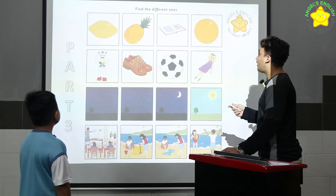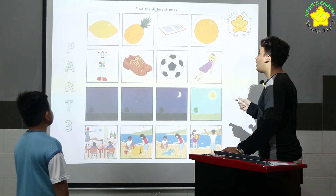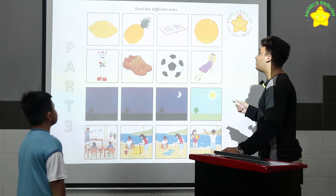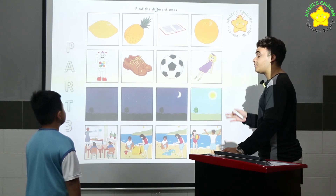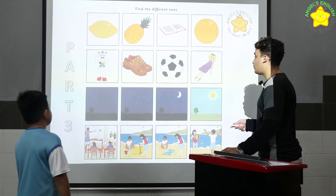Very good. All right, this is called Find the Different One. In row one, the book is different because the lemon, pineapple, and the orange are all fruits. Can you tell me rows two, three, and four?